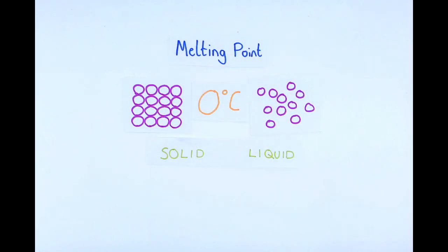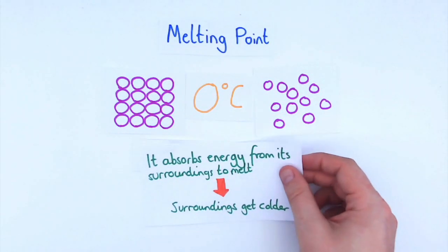Now this process of melting actually absorbs energy from its surroundings to melt it. Now that means that the surroundings get colder. So by having melting ice, the surroundings get colder, that includes the milk and it can turn into ice cream. However, why do we bother adding the salt?